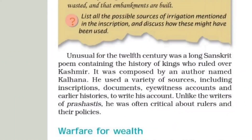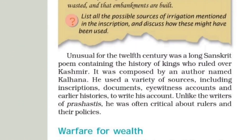Unusual for the 12th century was a long Sanskrit poem containing the history of kings who ruled over Kashmir. It was composed by an author named Kalhana. He used a variety of sources including inscriptions, documents, eyewitness accounts, and earlier histories to write his account. Unlike the writers of Prashastis, he was often critical about rulers and their policies.